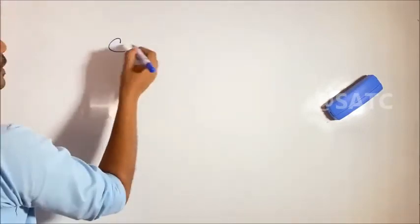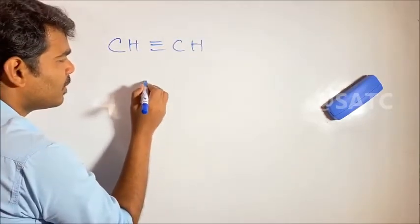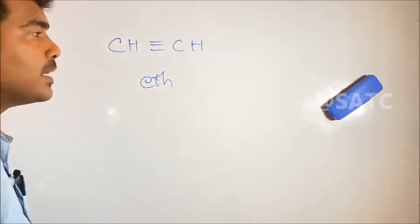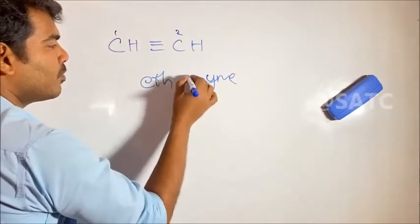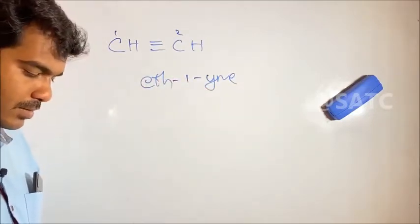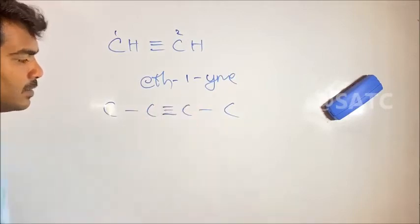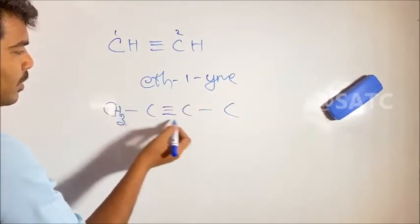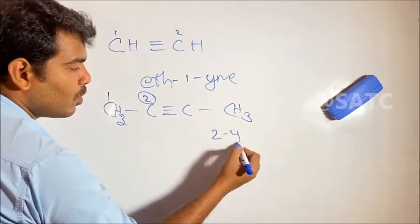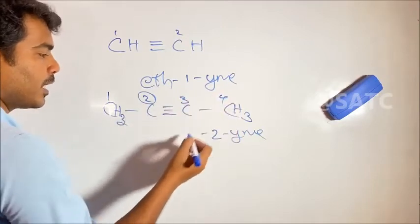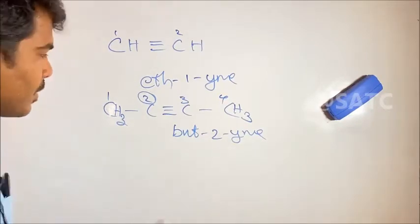For a triple bond, we call it a '-yne'. For example: CH triple bond CH. The suffix for a triple bond is '-yne'. Let's say we have CH3–C≡C–CH3. The double bond position is at 2, and we have 4 carbons, so 'buta-'. The name is but-2-yne.